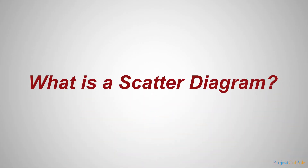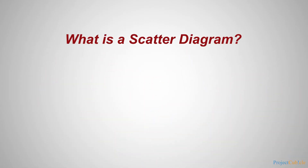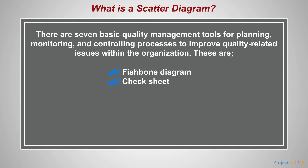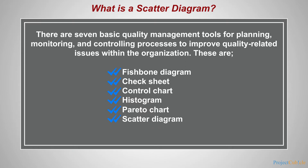What is a scatter diagram? There are seven basic quality management tools for planning, monitoring, and controlling processes to improve quality-related issues within the organization. These are: fishbone diagram, check sheet, control chart, histogram, Pareto chart, scatter diagram, and stratification.